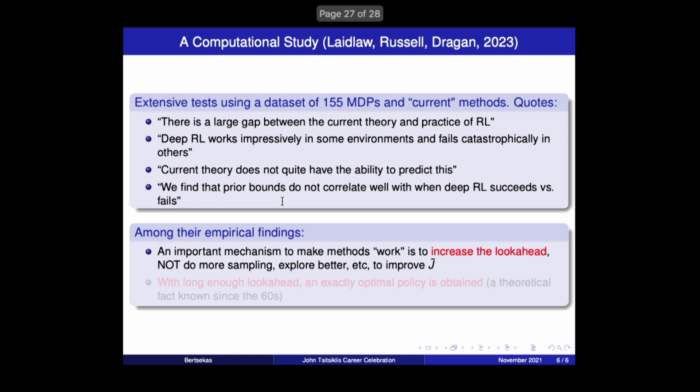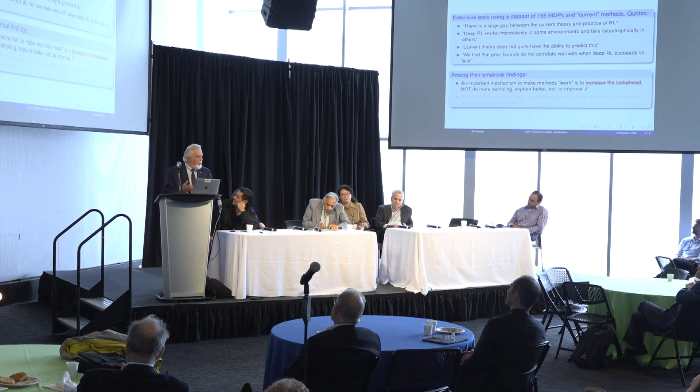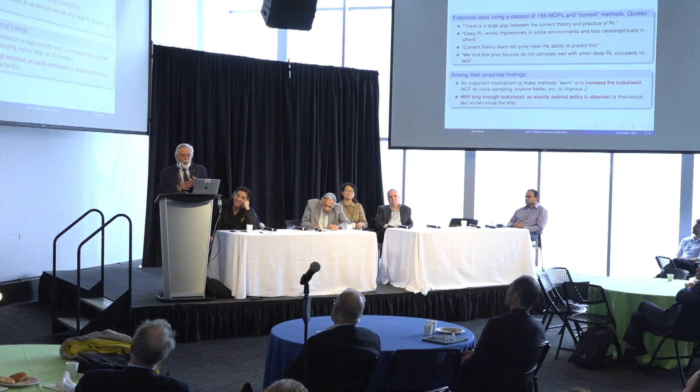And they have empirical findings, and the principal finding is that an important mechanism to make methods work is to increase the length of the look ahead, like alpha zero. People believe that alpha zero succeeds because it has huge look ahead. There are a number of ways you can increase look ahead, including rollout with some policy. So to them, this is the key, and that's what the computational results bring out. The quality of the approximation doesn't matter as long as the look ahead is long enough.